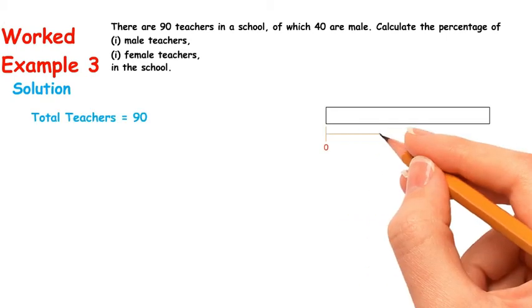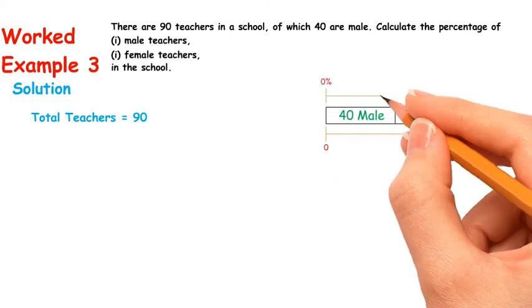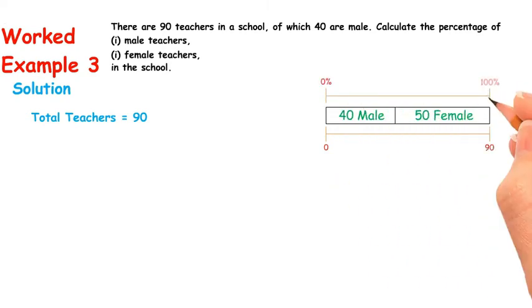There are 90 teachers in a school. 40 of them are male, 50 of them would be female. 90 teachers equals 100%. We are going to find out the percent of 40 male out of 90 teachers, and 50 female out of 90 teachers.